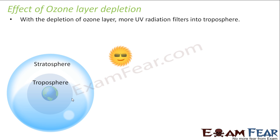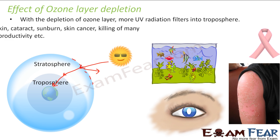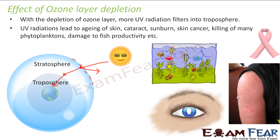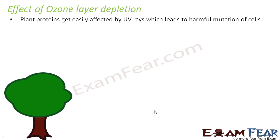With depletion of the ozone layer, more and more UV rays penetrate to the Earth's surface. These UV rays can lead to aging of the skin, sunburn, and skin cancer. They will also kill aquatic animals and plants, damage fish productivity, and cause cataracts. UV rays are very, very harmful. Additionally, plant proteins are easily damaged by UV rays, leading to harmful mutations in cells.